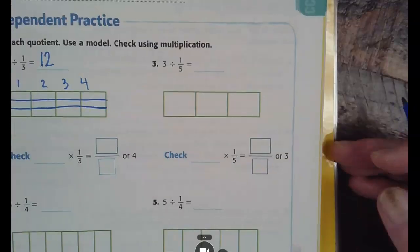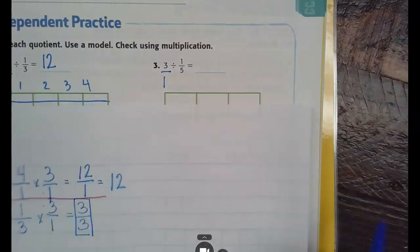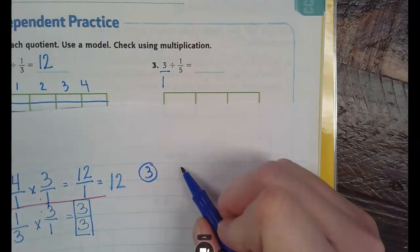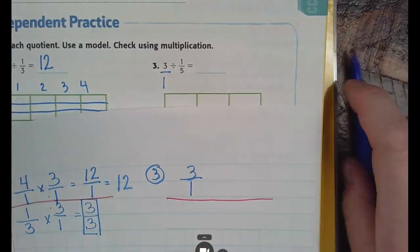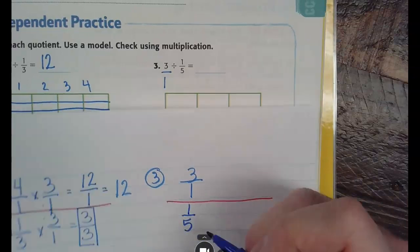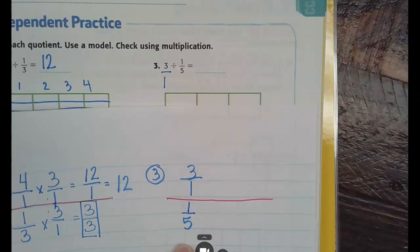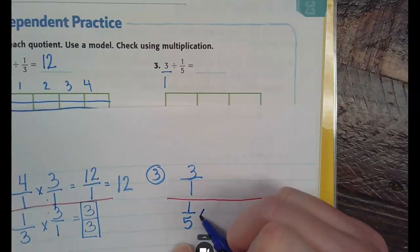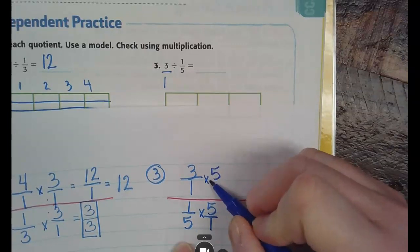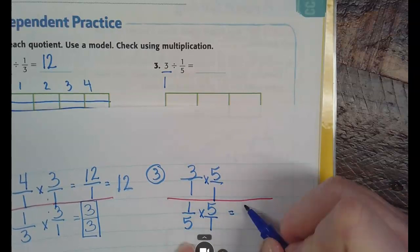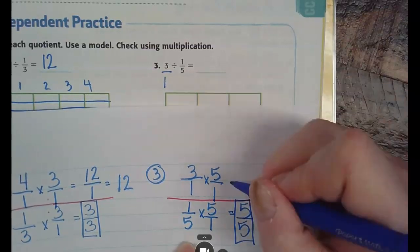Number 3. Do the math first. So, 3 goes over what? 1. So, number 3 looks like this. 3 divided by 1 divided by 1 fifth. Now, how do I get rid of 1 fifth? Multiply by the reciprocal, 5 over 1. Whatever I do to the bottom, I also do to the top. So, 1 times 5 is 5. 5 times 1 is 5 over 5 is 1 whole. Then I have 3 times 5, which is 15 over 1. 15 divided by 1 is 15 wholes.